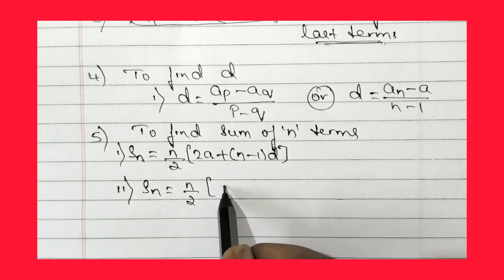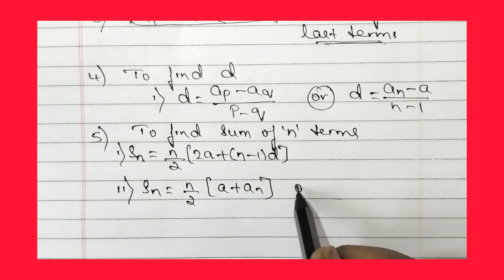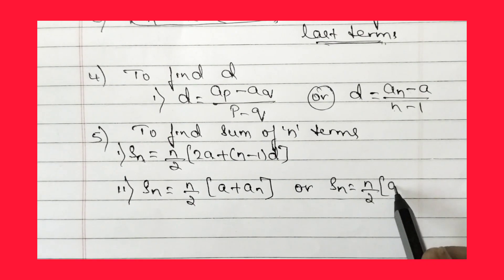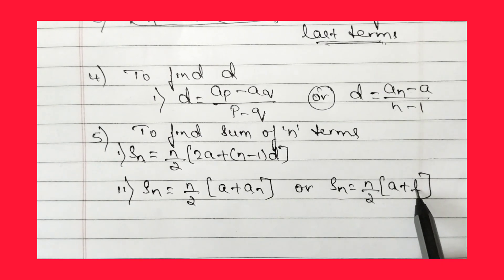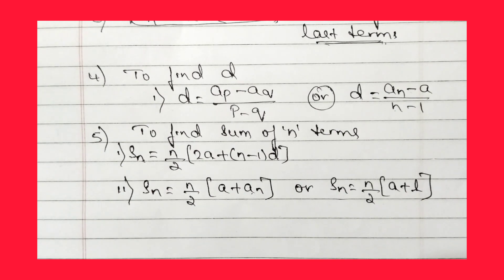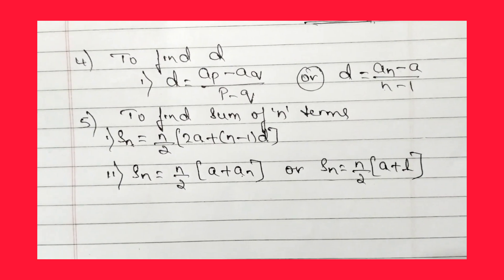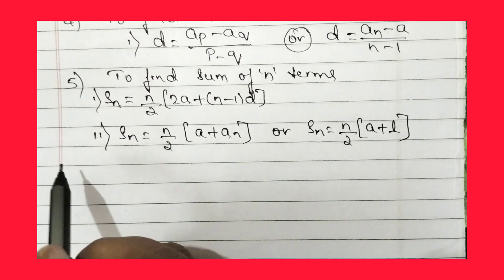Alternatively, we can find Sₙ using: Sₙ = n/2 × (a + aₙ), or Sₙ = n/2 × (a + l). We use these formulas to find the sum of n terms of an AP.